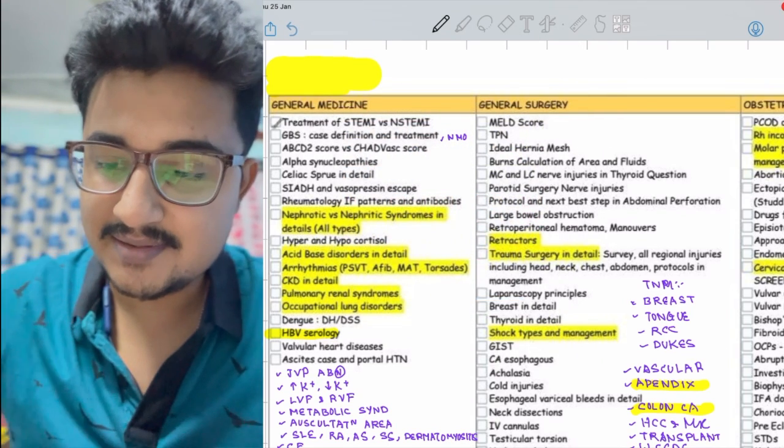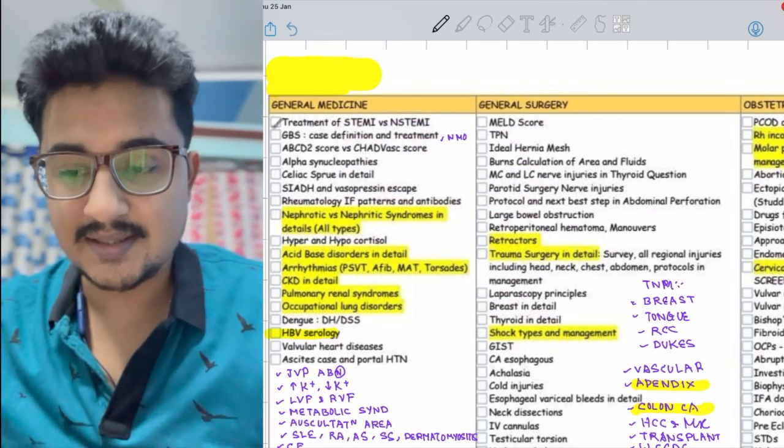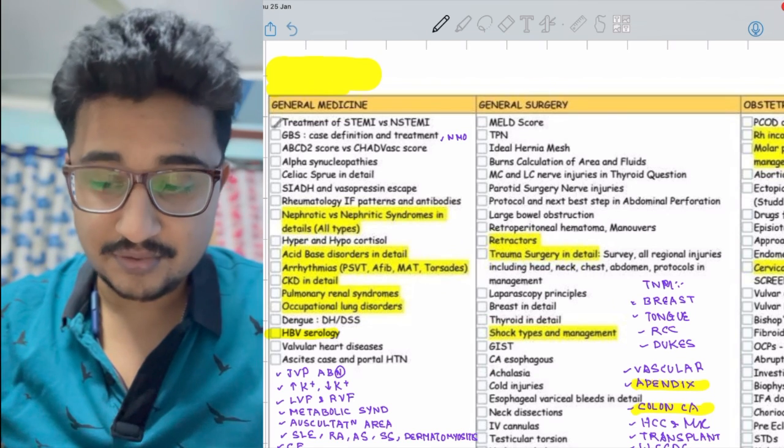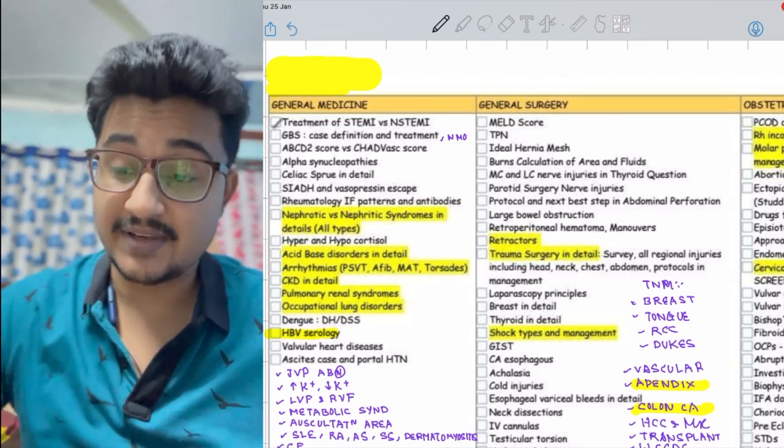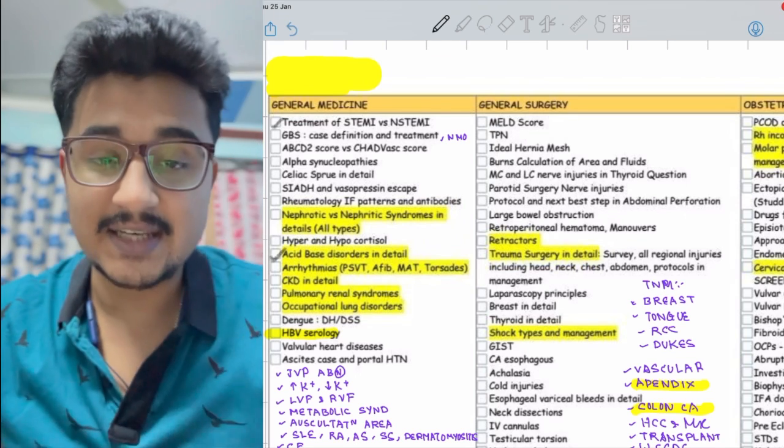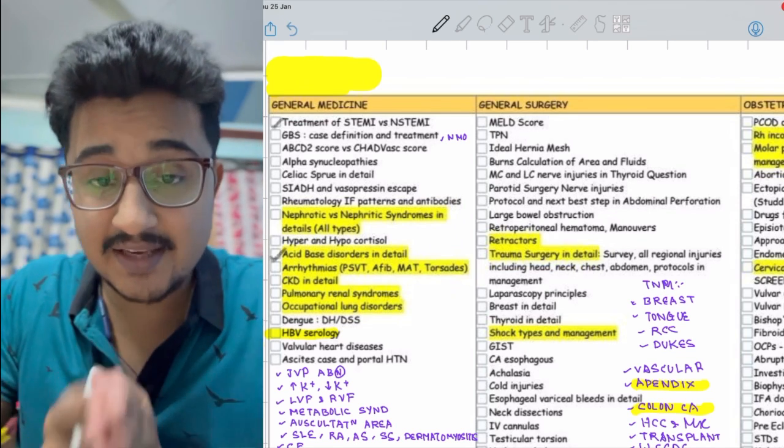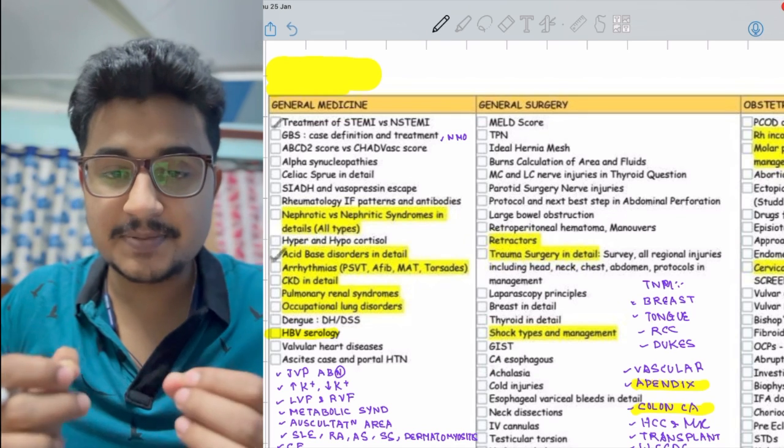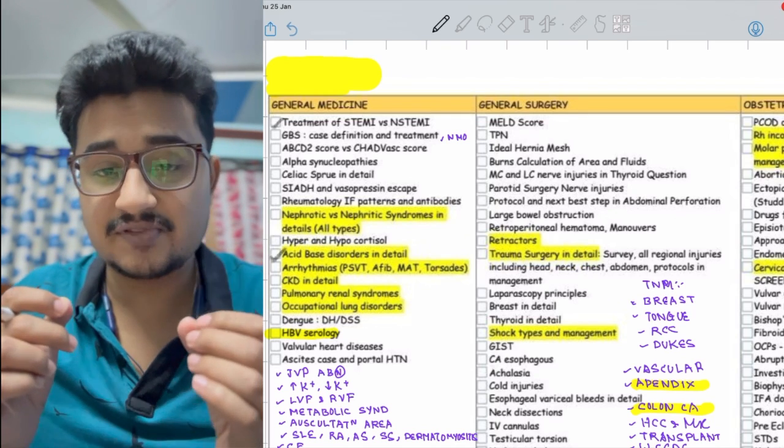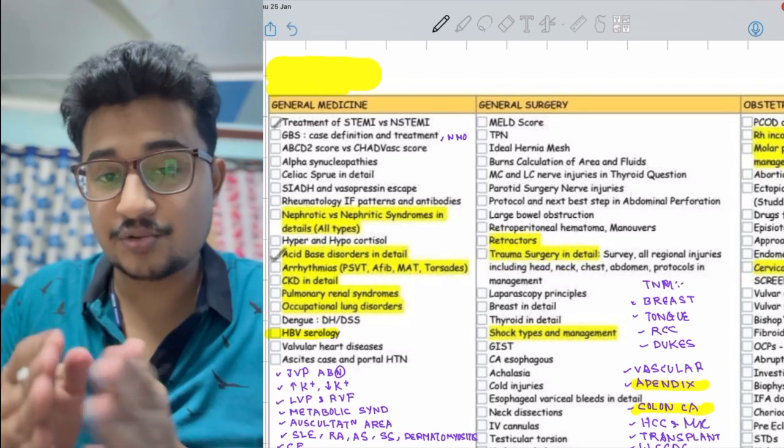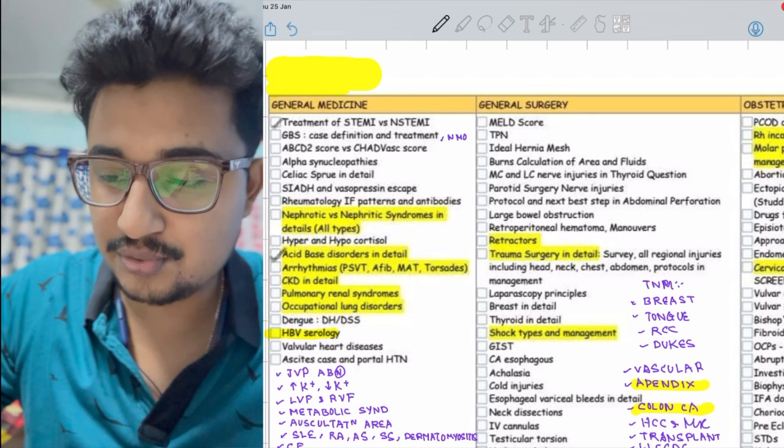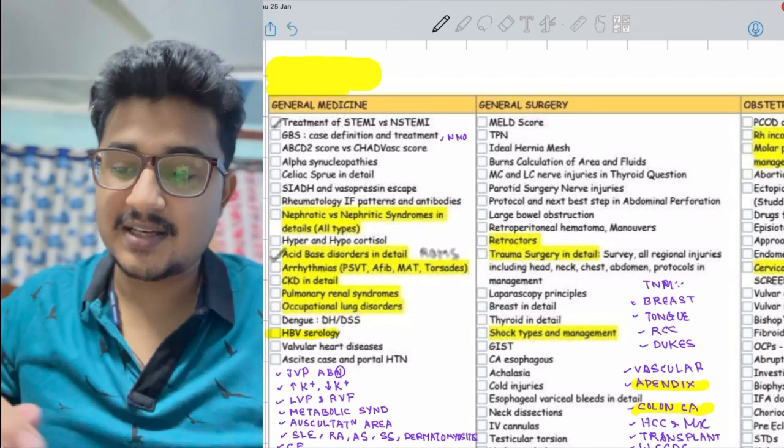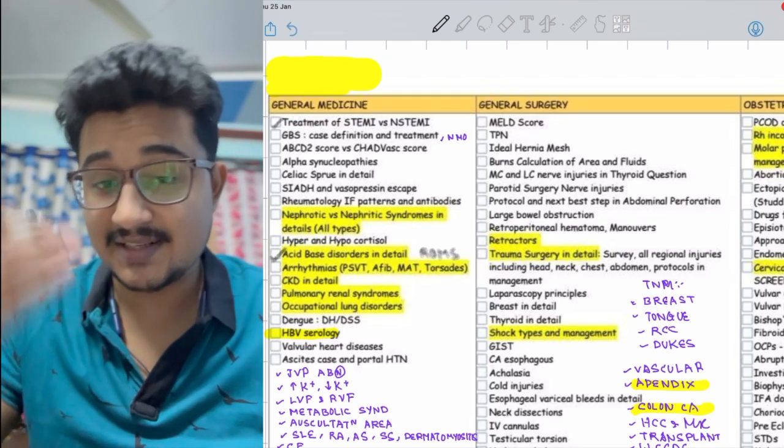First comes STEMI, BCD shock, VAS. Very important is nephrotic syndrome. Acid-base balance is very much important because they give MCQs regarding acid-base balance in NEET PG. The MCQs are very easy - metabolic acidosis or respiratory. You know the ROMS criteria: respiratory there is opposite, metabolic there is same side.